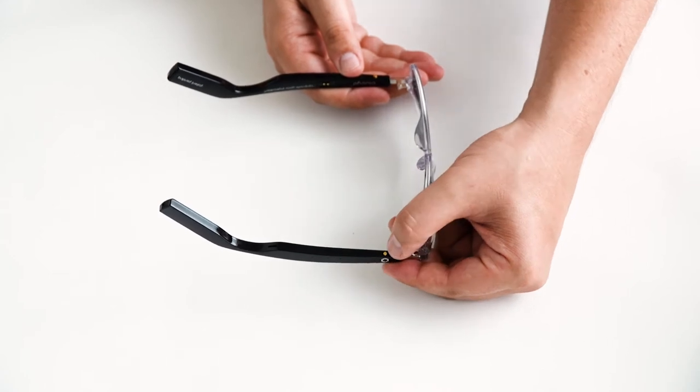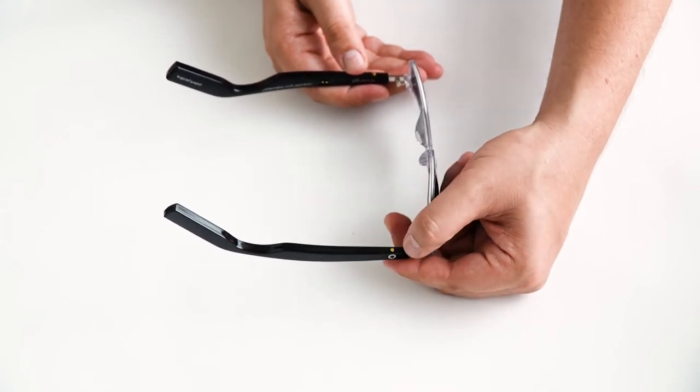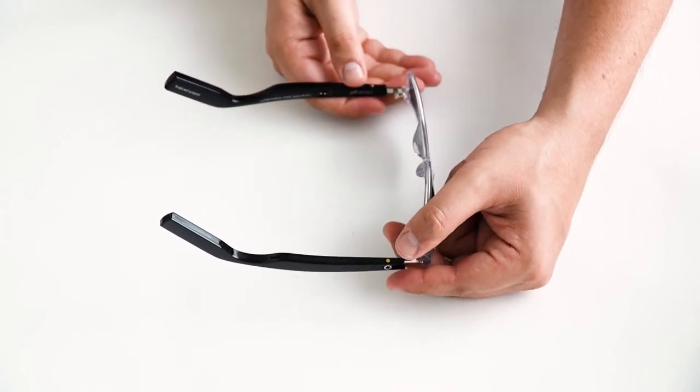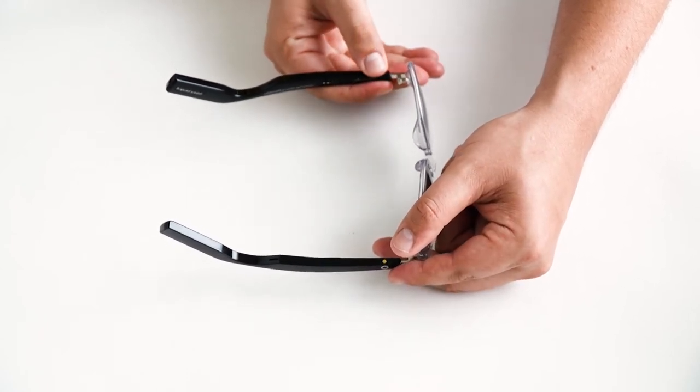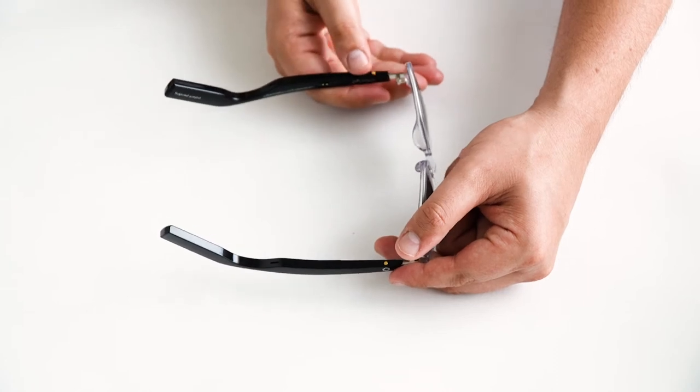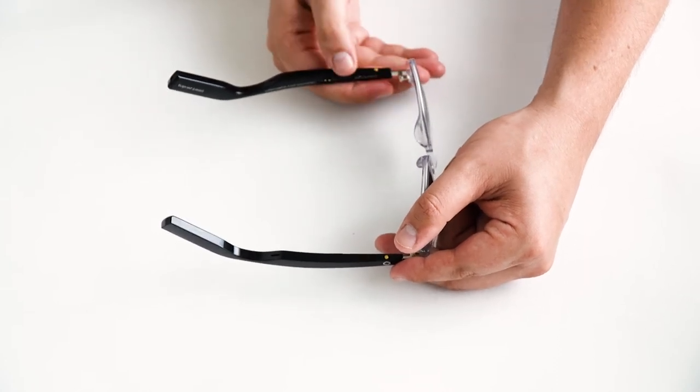To answer a call on the glasses, double click either button. Click twice quickly to answer an incoming phone call. To reject an incoming phone call, hold either touch button for about two seconds. Once you're on a call, double click again to hang up.